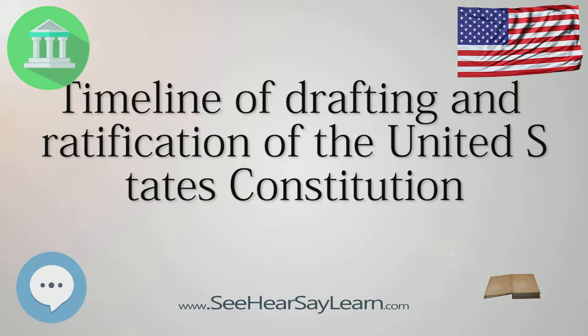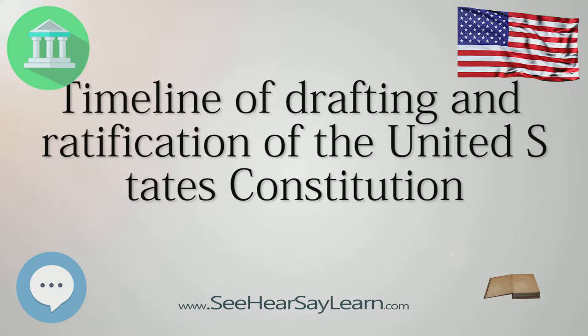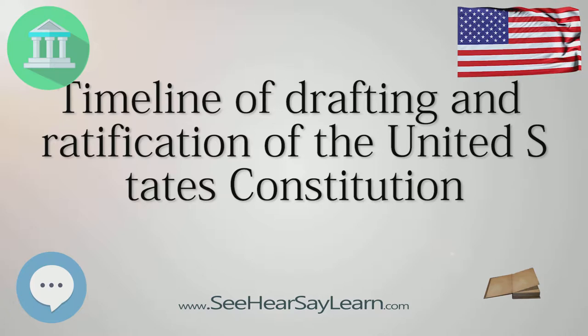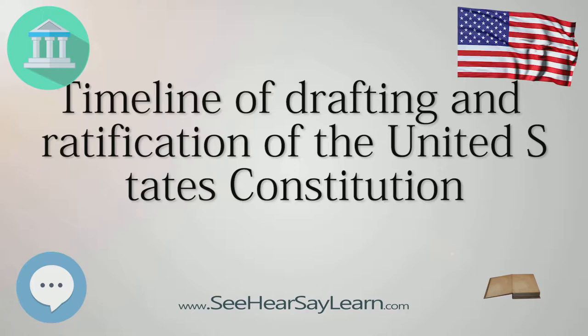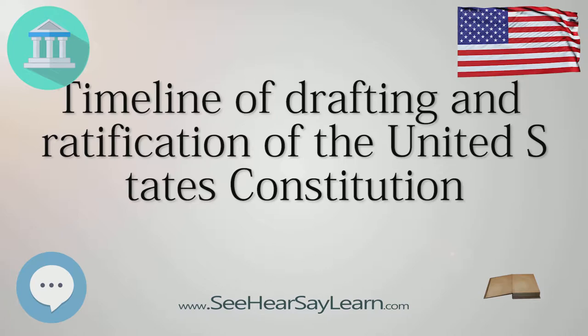August 22: A Committee of Eleven composed of Abraham Baldwin, George Clymer, John Dickinson, William Johnson, Rufus King, John Langdon, William Livingston, Luther Martin, James Madison, Charles C. Pinckney, and Hugh Williamson is selected to address issues related to federal tax and duty levying powers and also its power to regulate or prohibit the migration or importation of slaves.